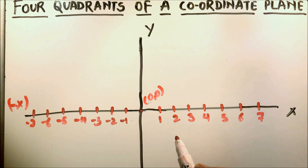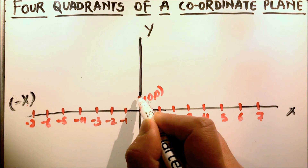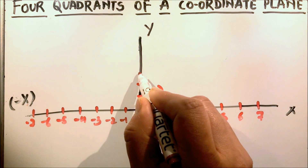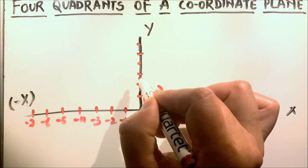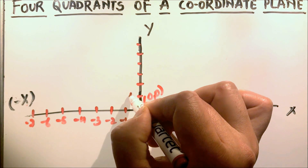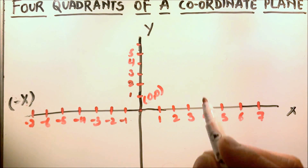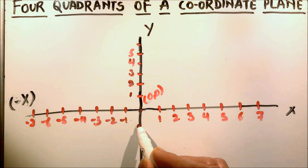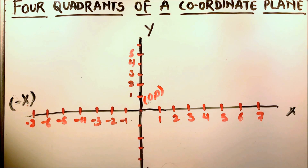Similarly, this is another number line which is crossing it at the origin. When we go up, the numbers are increasing, so this is positive: 1, 2, 3, 4, 5. And when we go down, the numbers are decreasing, so these are negative.